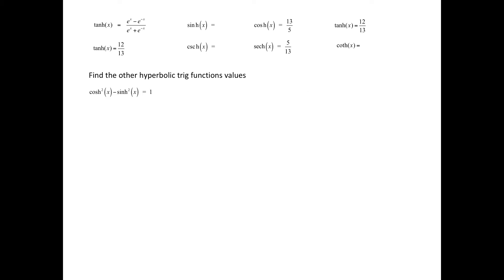We can now use another hyperbolic trig identity to find the hyperbolic sine of x. That identity is: the square of the hyperbolic cosine of x minus the square of the hyperbolic sine of x is equal to 1. Substituting 13 fifths for the hyperbolic cosine of x, we find the square of 13 fifths minus the square of the hyperbolic sine of x equals 1. Solving, 169 over 25 minus 1 equals the square of the hyperbolic sine of x, and combining with a common denominator, the square of the hyperbolic sine of x equals 144 over 25.